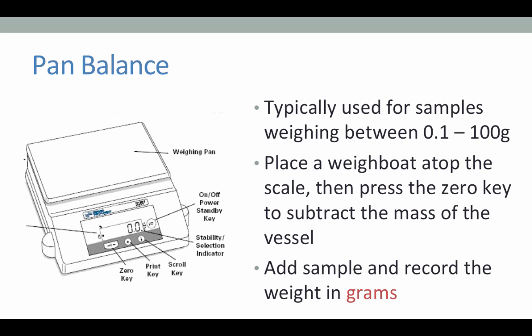When we use a pan balance to weigh an item, we do not put the item directly on the scale, but rather use a weigh boat. This is a small plastic dish. It weighs very little. It can be used to hold our sample to keep the balanced surface clean. So we'll place the weigh boat atop the scale and press the 0 key to subtract the mass of the weigh boat from the measurement of our sample. We would then add our sample and record its mass in grams using all of the decimal places displayed.